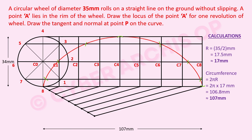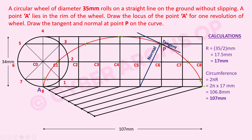The question also asks to draw a tangent and normal at point P on the curve. Since no specific point is given, we take the arc drawn with the compass on C5. Join that arc point to the corresponding point on the base line — this line is the normal. Then draw a line at 90 degrees to the normal through point P using a protractor; this is the tangent. Remember to label the traced point as A and the point of tangency as P for full marks.